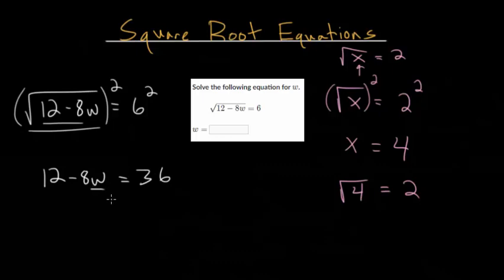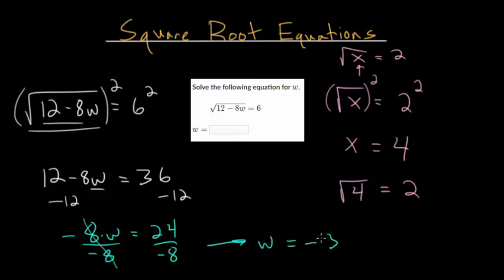Now we have a linear equation which we can solve. To solve for w, I'm going to subtract 12 on each side of this equation. Then we get negative 8w equals 24. To get w by itself, we'll divide everything by negative 8 to cancel out that multiplication. Negative 8 divided by negative 8 is 1. We get w equals 24 divided by negative 8, which is negative 3.